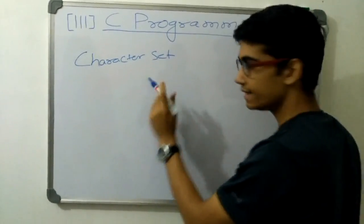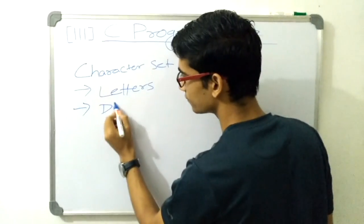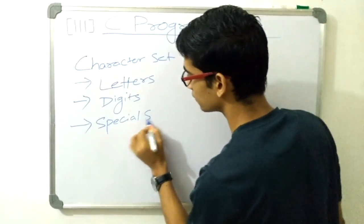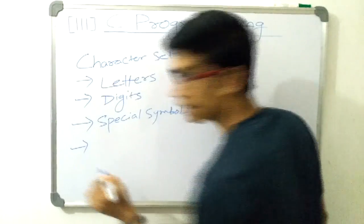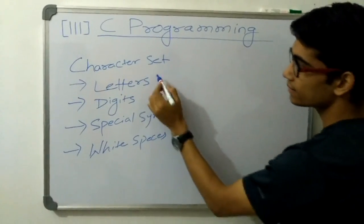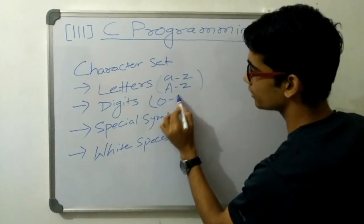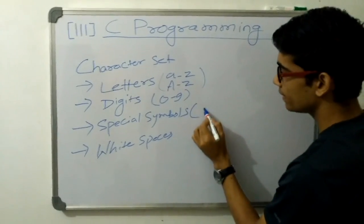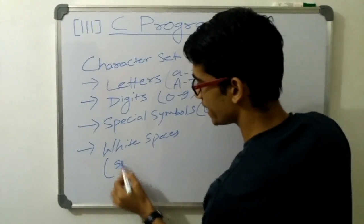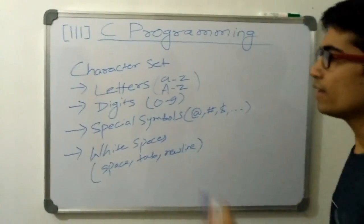Character set in C consists of first letters, digits, special symbols, and white spaces. Letters consist of small a to small z, capital A to capital Z. Digits are from 0 to 9. Special symbols comprise of, for example, at the rate, hash, dollar, and so on.